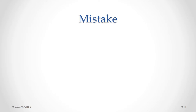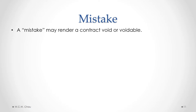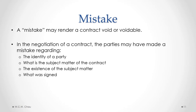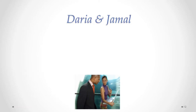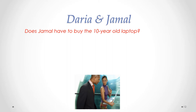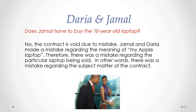Another type of contractual defect is a mistake. A mistake may render a contract to be void or voidable. In negotiating a contract, the parties may have made a mistake regarding a number of different things: the identity of one of the parties to the contract, the subject matter of the contract, the existence of the subject matter, or even a mistake as to what exactly was being signed when the agreement was entered into. Does Jamal have to buy the outdated 10-year-old laptop? The answer is no. The contract is void due to mistake. Jamal and Daria made a mistake regarding the meaning of 'my Apple laptop,' and therefore there was a mistake regarding the subject matter of the contract.